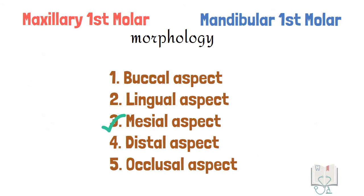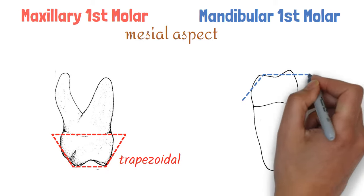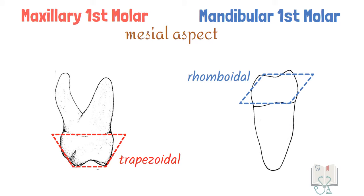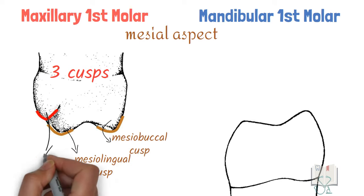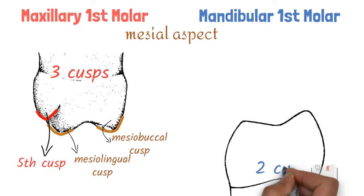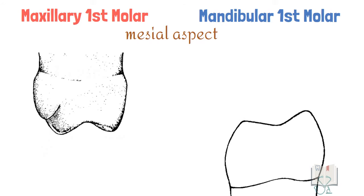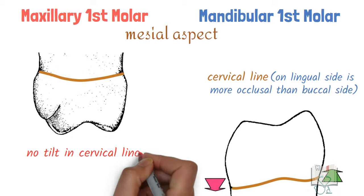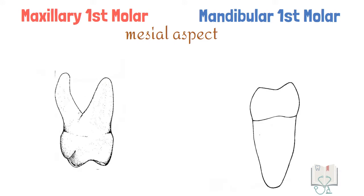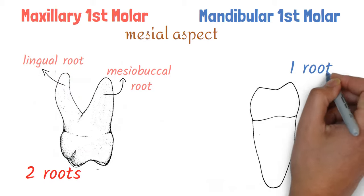Next, the mesial aspect. The outline form of the crown of maxillary first molar is trapezoidal in shape, whereas in mandibular first molar it is rhomboidal in shape. In maxillary first molar, three cusps are visible: mesolingual cusp, mesiobuccal cusp, and the cusp of Carabelli, whereas in mandibular first molar two cusps are seen: mesolingual cusp and mesiobuccal cusp. In mandibular first molar, the cervical line is slightly tilted with its lingual side being more occlusal than its buccal side; no such tilt is present in maxillary first molar. In maxillary first molar only two roots are visible — lingual root and mesiobuccal root — whereas in mandibular first molar only the mesial root is visible.